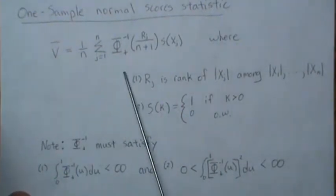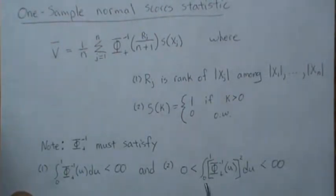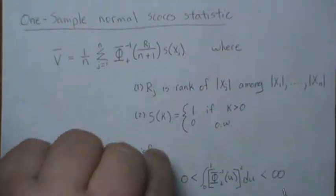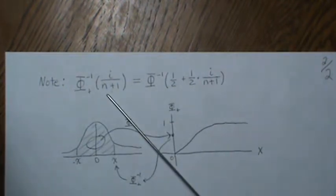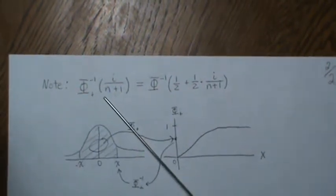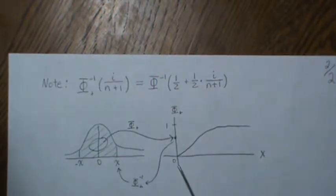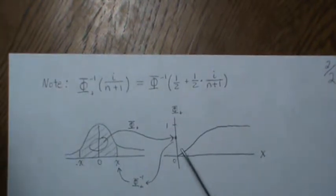The score generating function must satisfy certain criteria: it must be finite when you integrate it from 0 to 1, and integrating its square from 0 to 1 must be positive and finite. Now, looking at this function — it's between 0 and 1 like a CDF, but it goes from 0 to x, and this value is mapped back via the inverse. When mapped through the inverse, this area is what we need to look at.